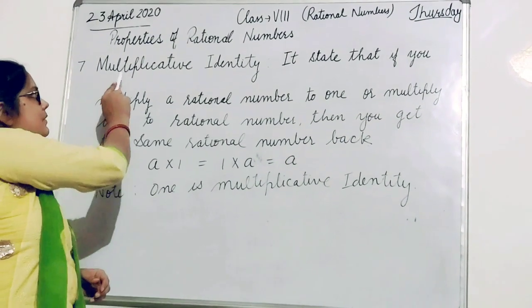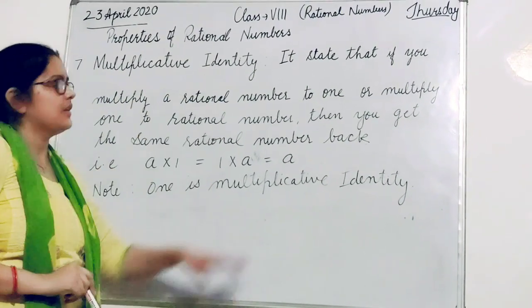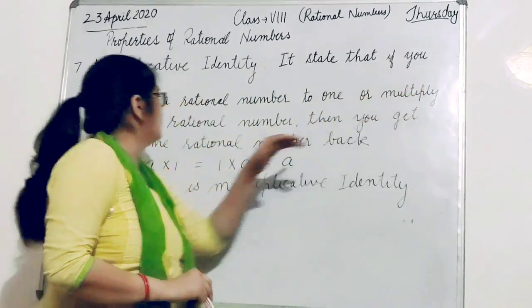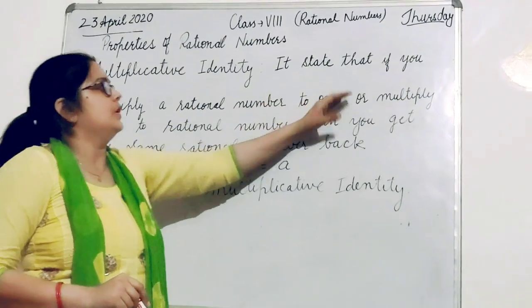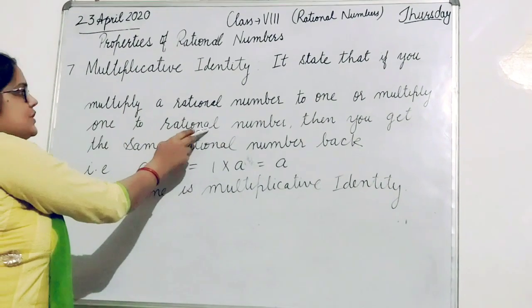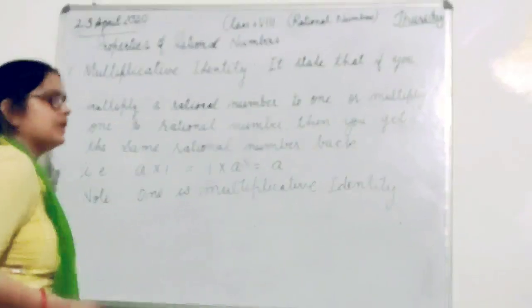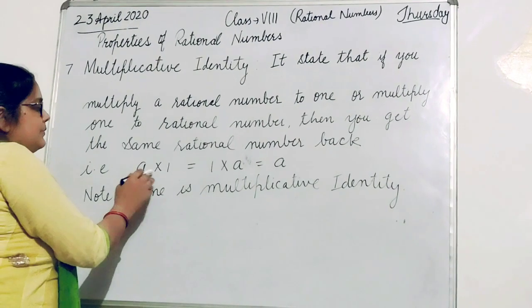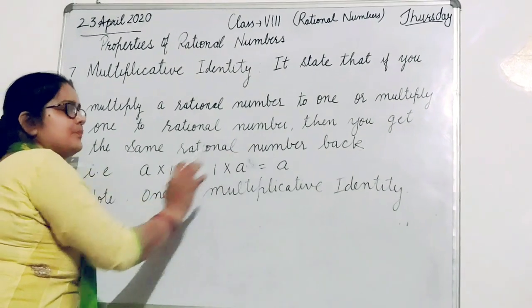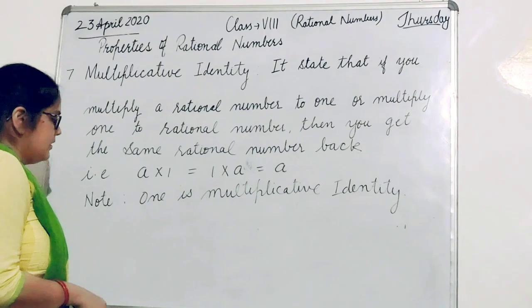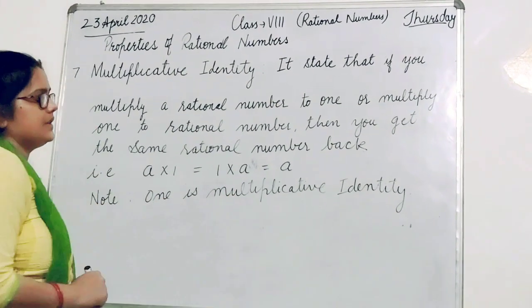Property number 7: multiplicative identity. It states that if you multiply a rational number by 1, or multiply 1 by a rational number, then you get the same rational number back. That is, a multiplied by 1 equals 1 multiplied by a, equals a. Note: 1 is the multiplicative identity.